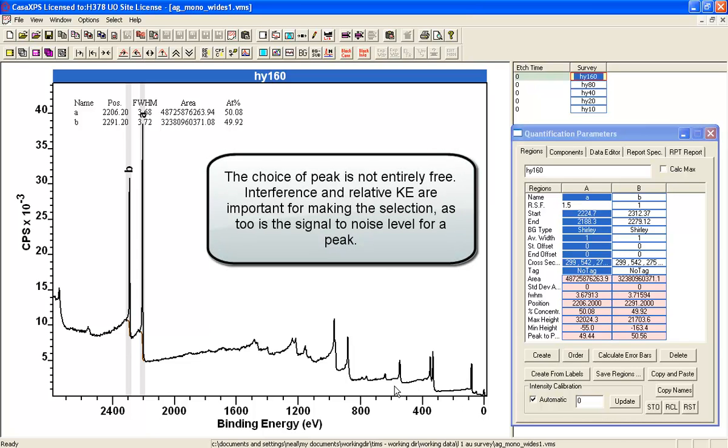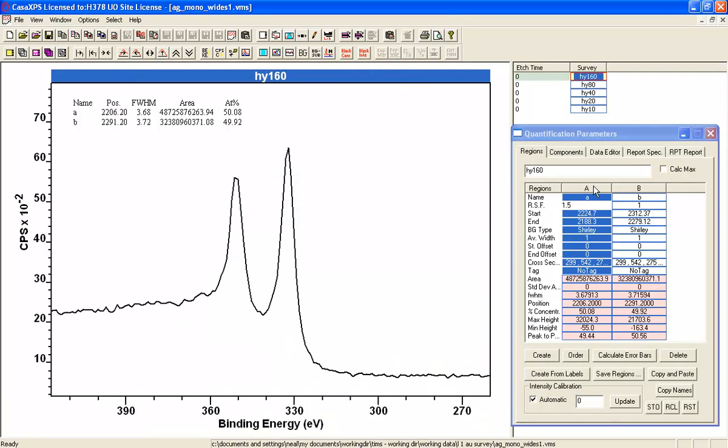So all of these peaks are possible candidates, all emanating from gold. And if I have relative sensitivity, so if I can determine the area of this peak relative to A or B, then I can still measure my amount of gold.